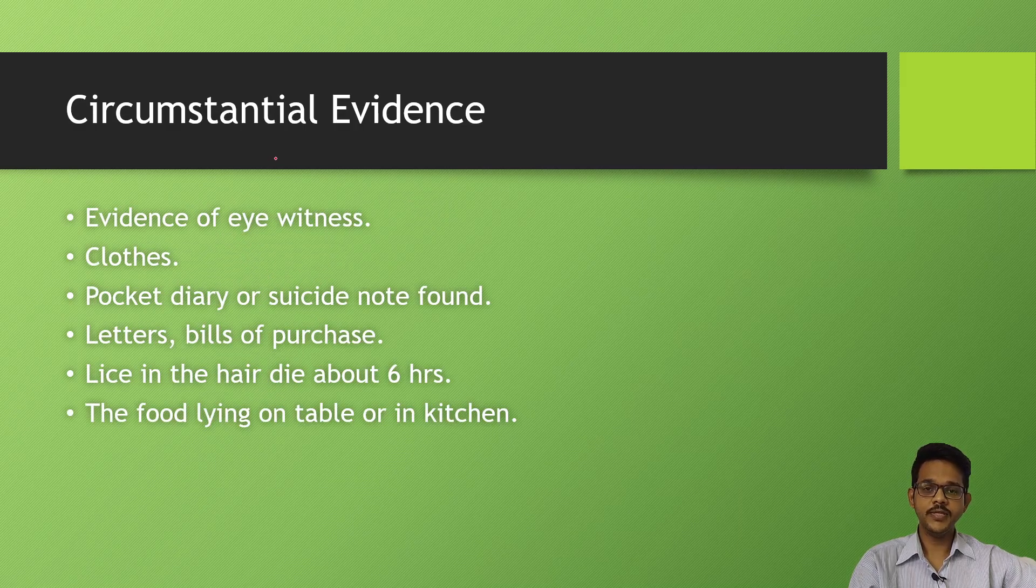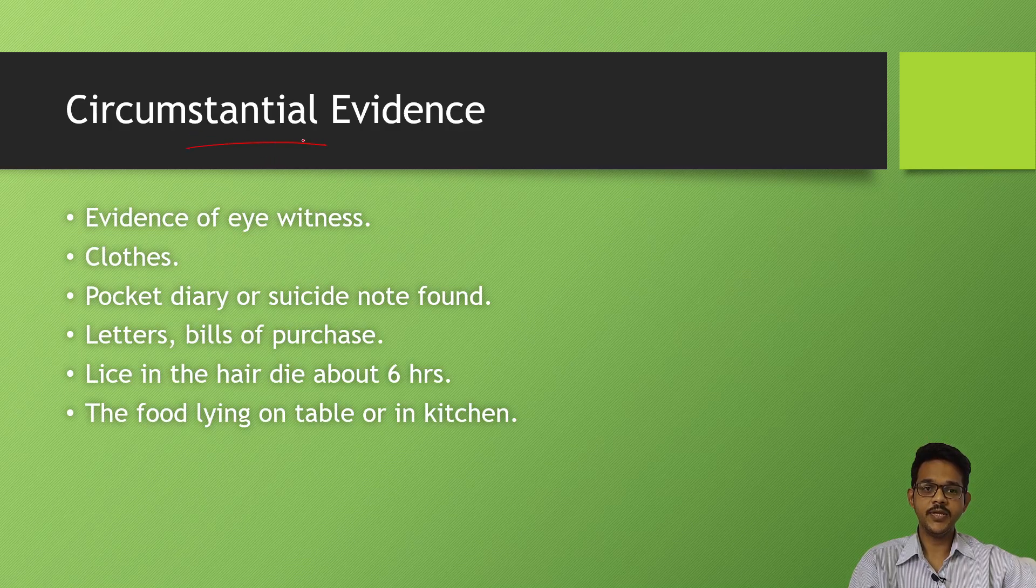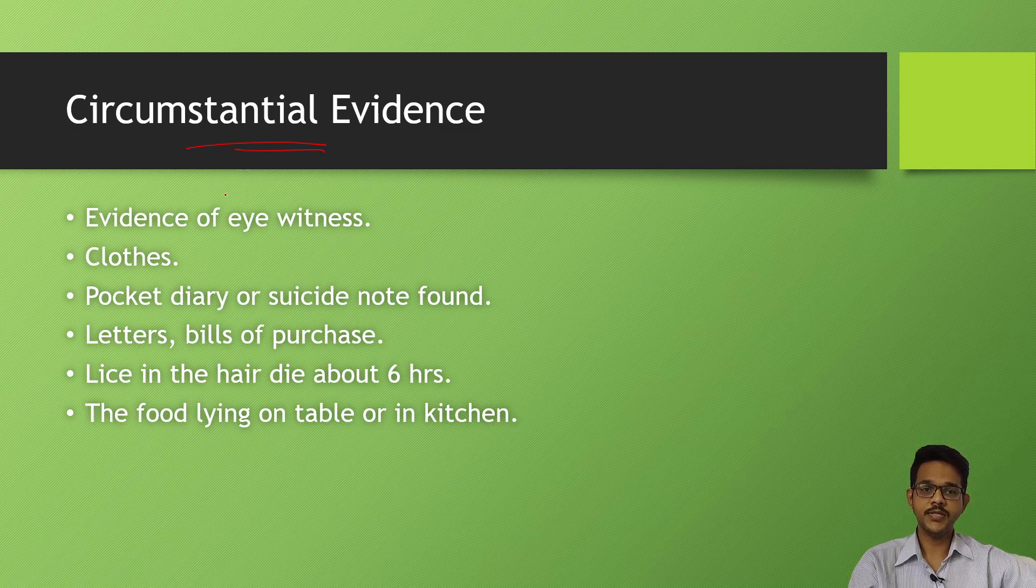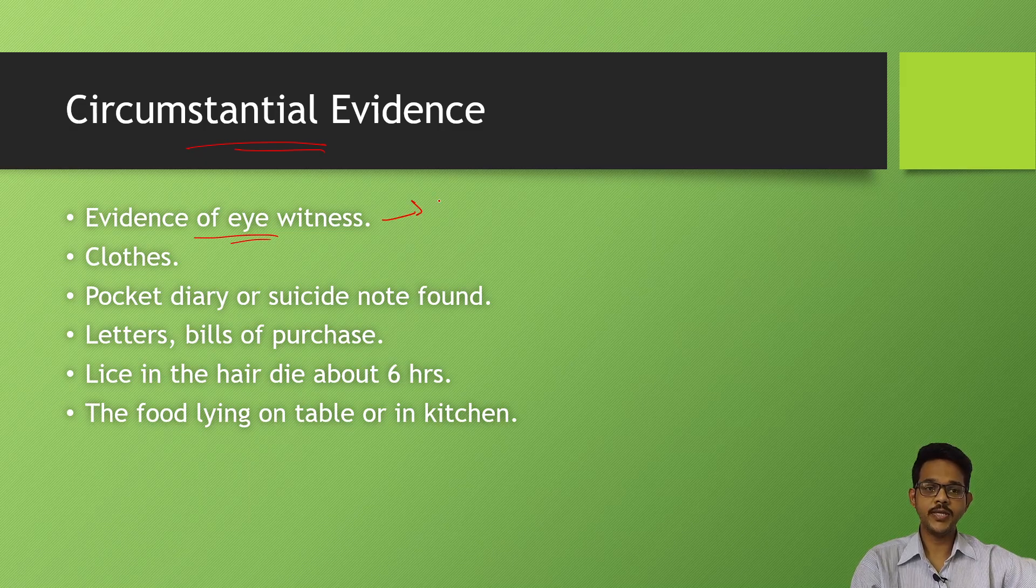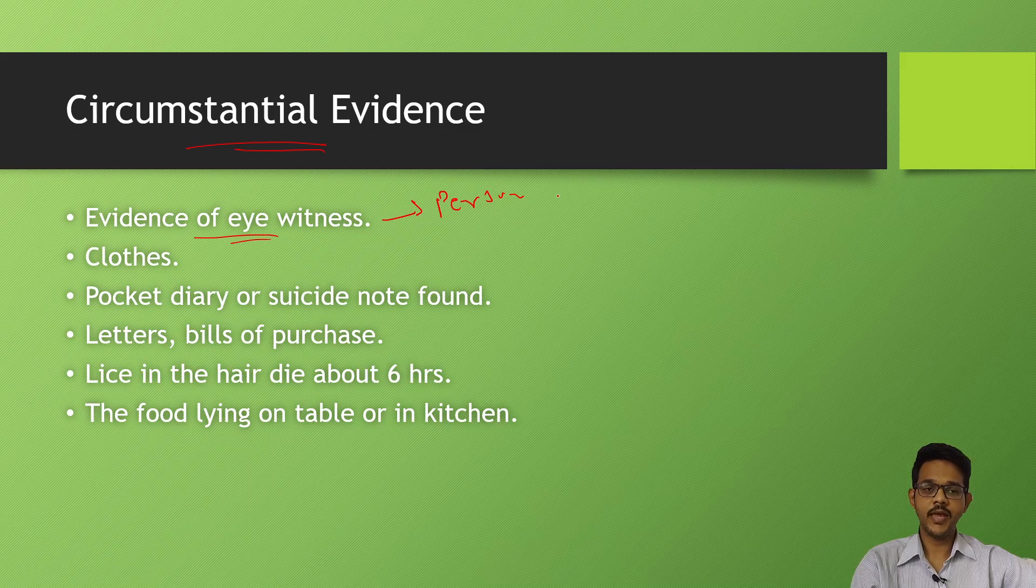Circumstantial evidence means evidence which are not so accurate but which will be helpful for estimation of time since death. One is evidence of eyewitness - a person who has seen at the time of death or before death can be helpful whether he was alive or not.